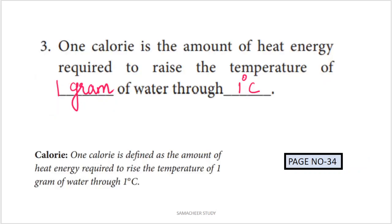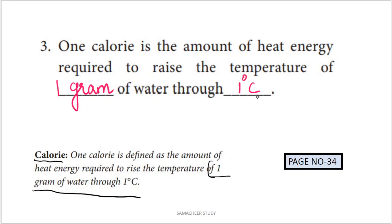Next question: 1 calorie is the amount of heat energy required to raise the temperature of dash of water through dash. From page number 34: 1 calorie is defined as the amount of heat energy required to raise the temperature of 1 gram of water through 1 degree centigrade. So fill in: 1 gram of water through 1 degree centigrade.